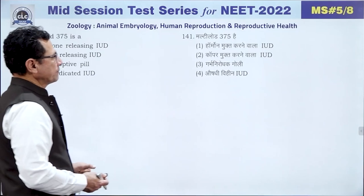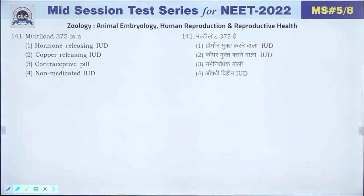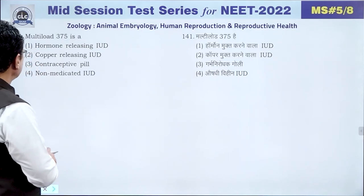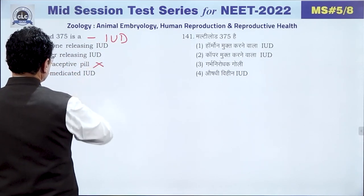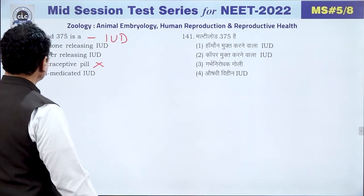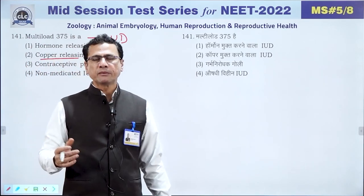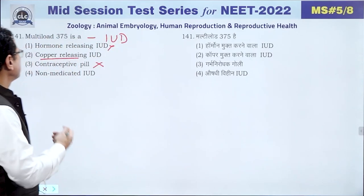Question 141: Multi-load 375 is a copper-releasing IUD contraceptive. It does not contain hormones. Copper ions reduce the fertilizing capacity of sperm. The answer is 2 — copper-releasing IUD.